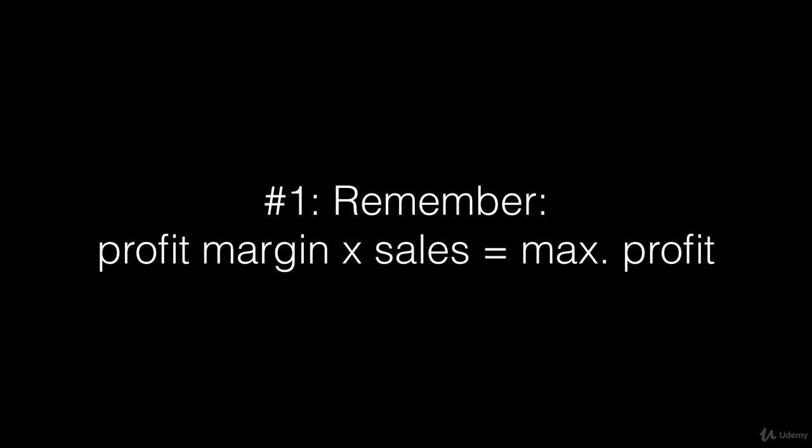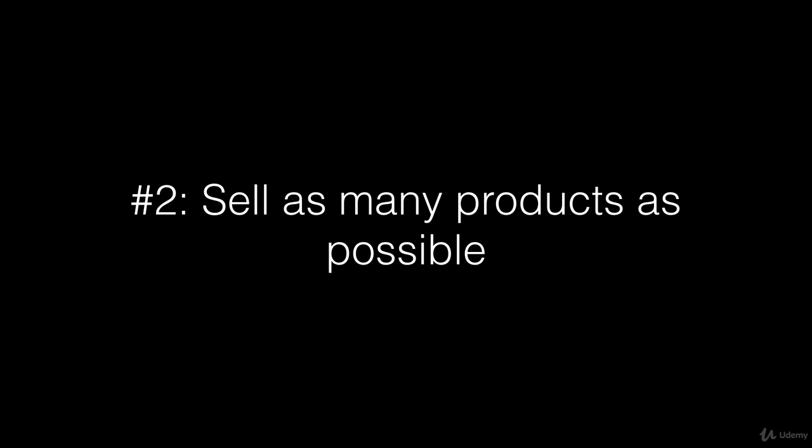So when you take 500 sales times 5 dollars as a profit margin, you get 2,500 dollars. But if you take a product with a 10 dollar profit margin times 100 sales, you are going to end up at a thousand dollars in profit. Both is a positive number, but what you want to make sure is that you generate as much money as possible with your sales. In this case, it is definitely product number 2. So just remember this formula: profit margin times sales equals the maximum profit.